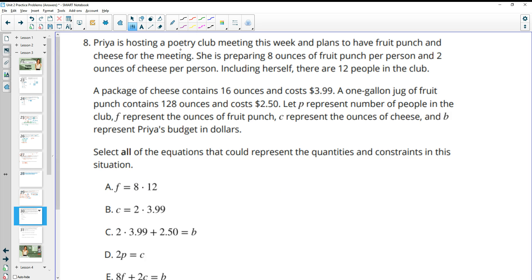Number eight, Priya is hosting a poetry club meeting this week and plans to have fruit punch and cheese for the meeting. She's preparing eight ounces of fruit punch per person and two ounces of cheese per person. Including herself, there are 12 people in the club. So from doing an example like this previously, I just want to kind of write out maybe something to do with that before I get to the next ones. So for the fruit punch, which maybe they give us a variable for down here, they give it to us as F. So she's planning on fruit punch of eight ounces per 12 people. Then the cheese, so they're calling cheese C, the cheese she's planning on two ounces of cheese for each of the 12 people. So I'm just going to write out those equations just to start because I remember doing an example like this previously.